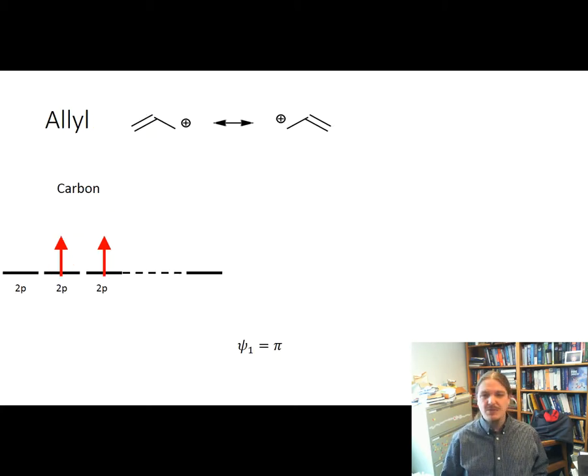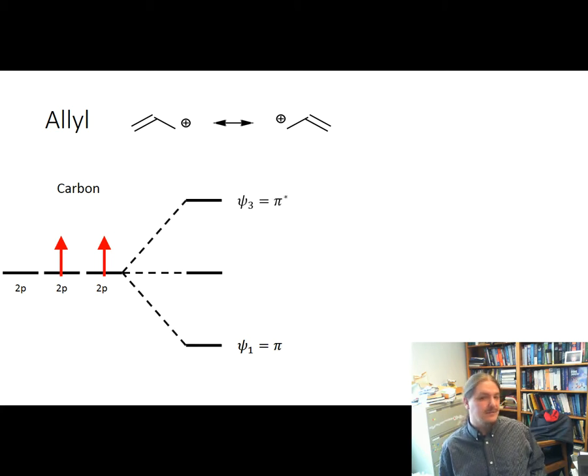I want to show one more, and that is the allyl system. So this is a three carbon system. Not all textbooks go into the three carbon system, but I think it's really good example of how molecular orbital theory complements resonance or just deals with resonance. So I've drawn the structure of the allyl cation and its principal and its two principal resonance contributors up there at the top.